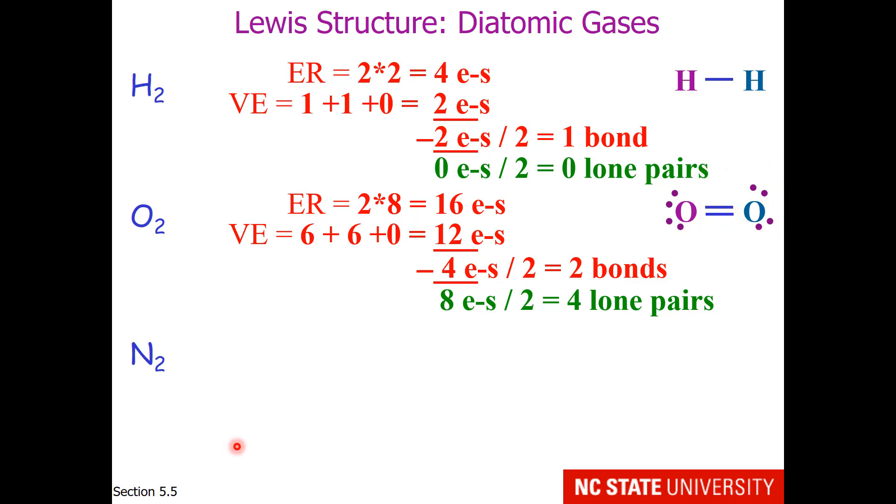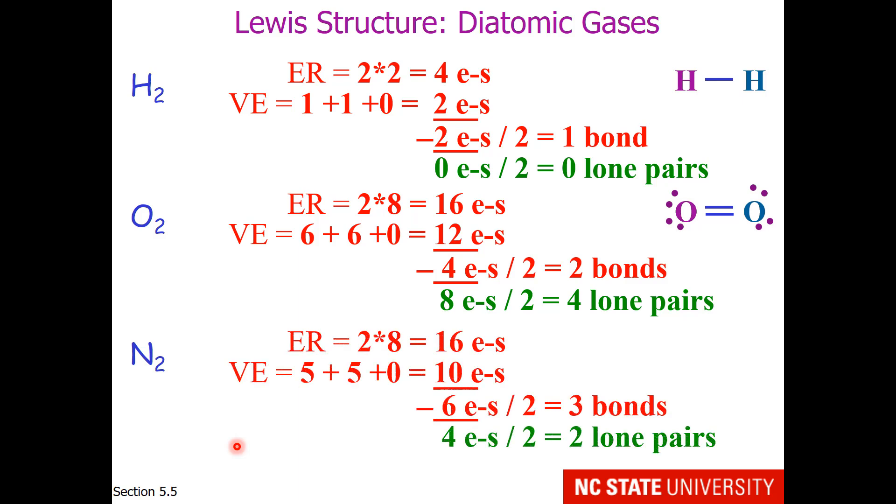And if we were to do the calculation for nitrogen, you would discover that it has 3 bonds. So 2 nitrogens with 3 bonds between them, and each nitrogen has a lone pair. So each nitrogen has access to 8 electrons, like its nearest noble gas.